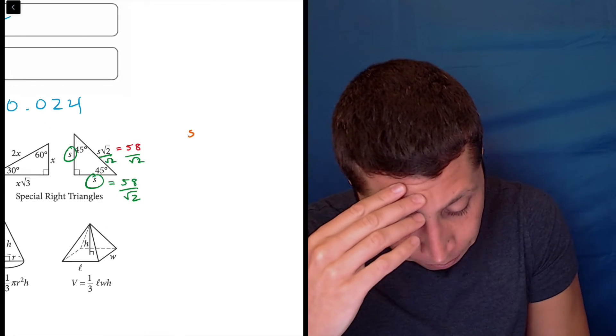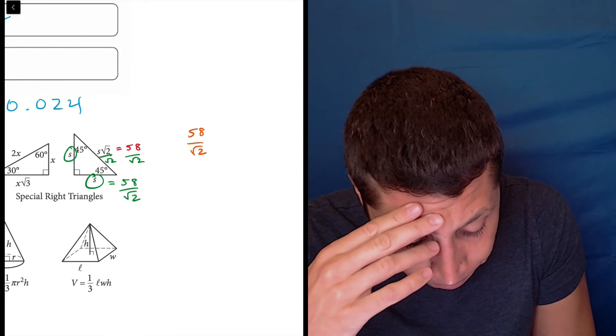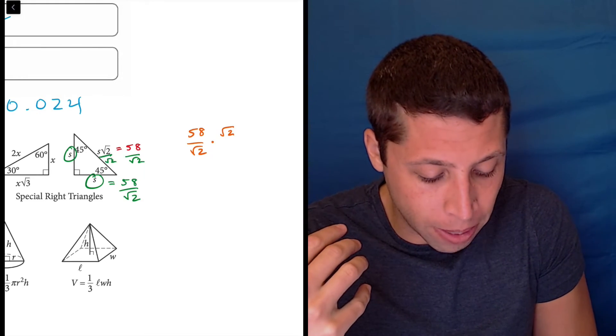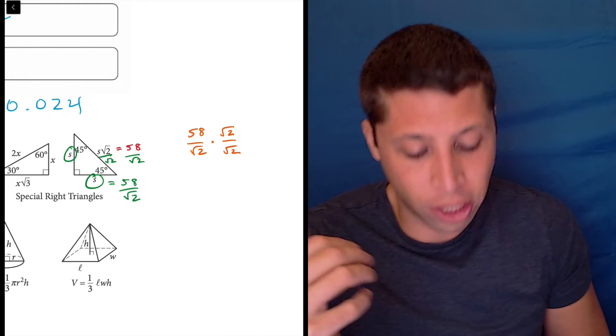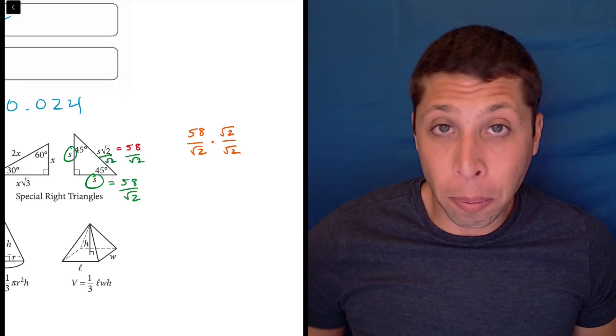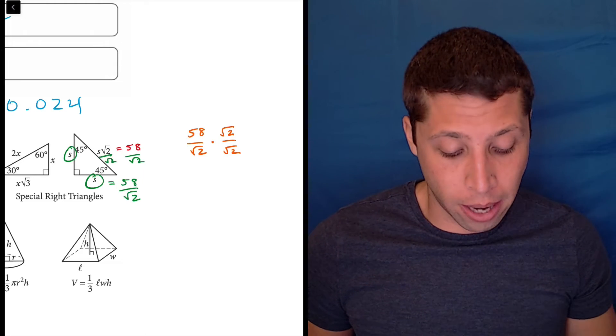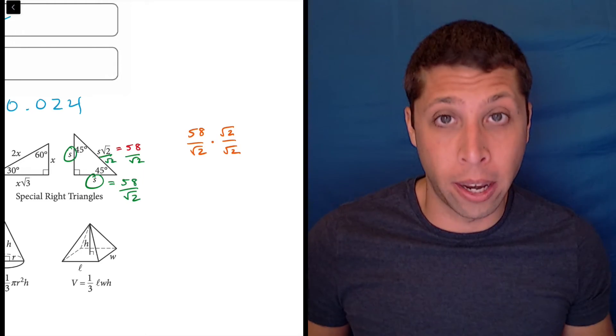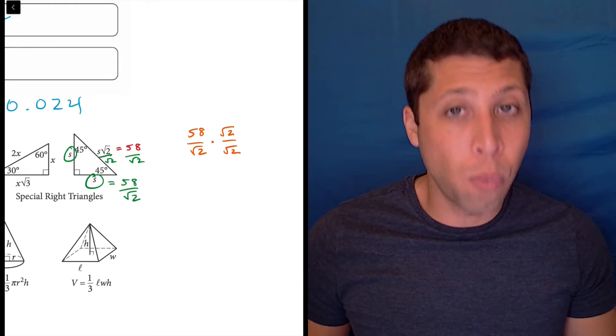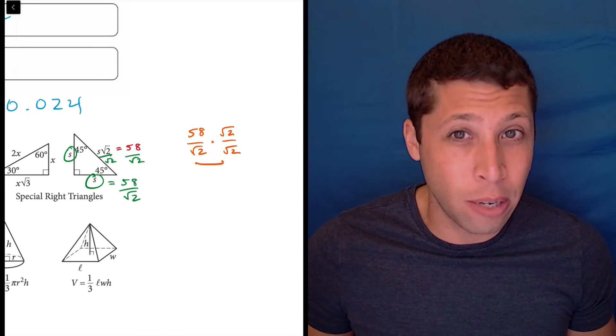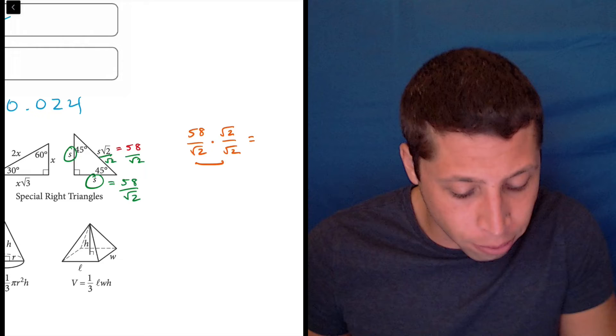So coming back over here, the way to do it is we use the properties of fractions to kind of just make something look a little different without changing its value. So if we multiply by the square root of 2 on both the top and the bottom, we're not changing the value of the number, right? Radical 2 over radical 2 is 1, so we're basically just multiplying this thing by 1, but we're doing it in a way that lets us change the bottom from this messy root 2 into now something nicer.